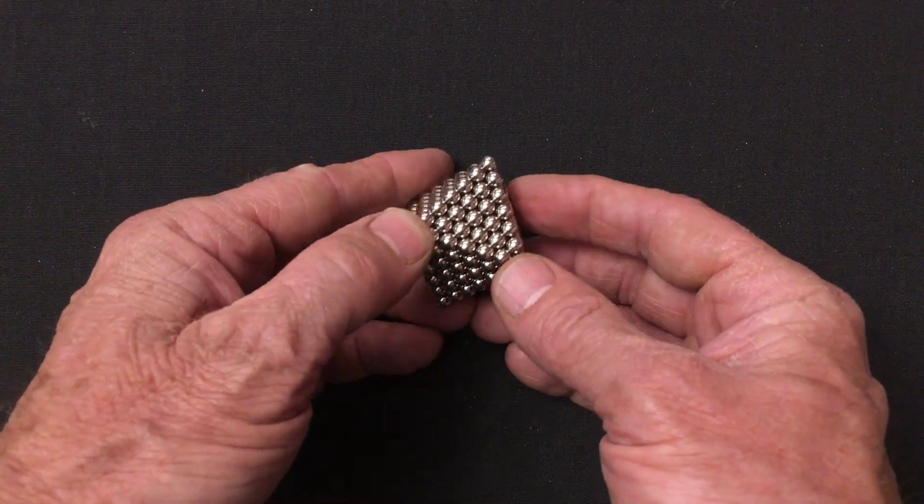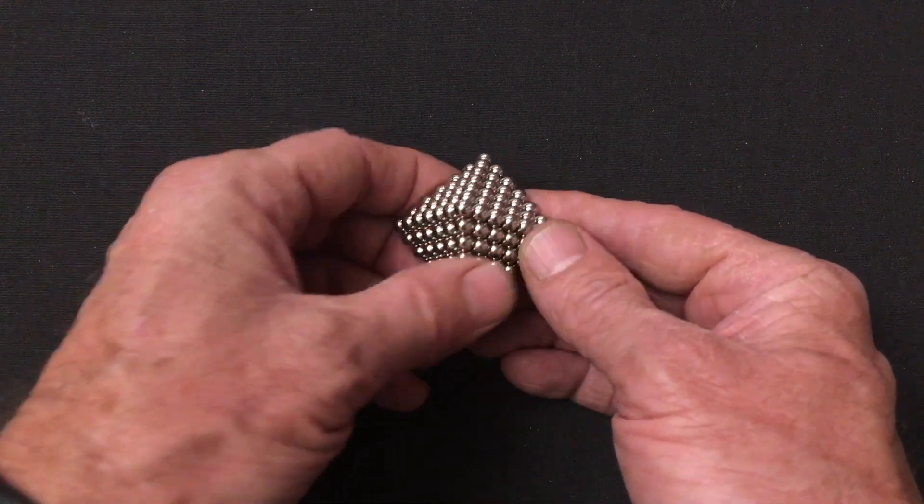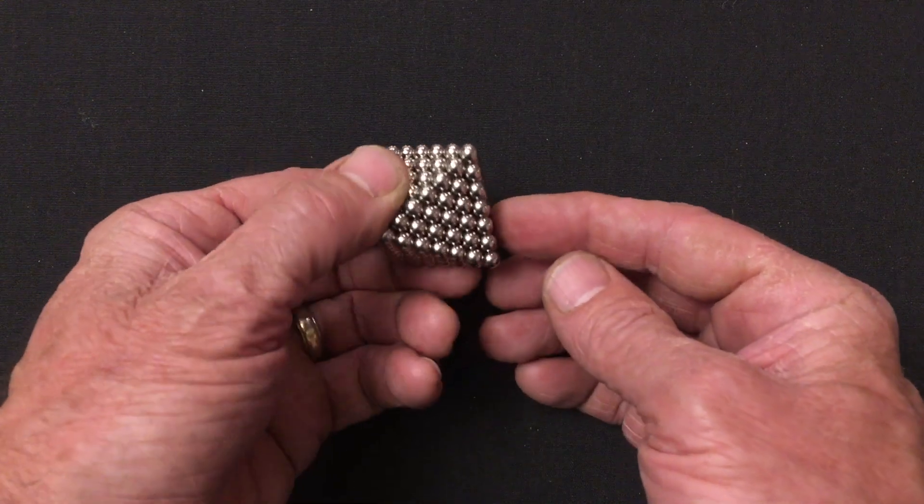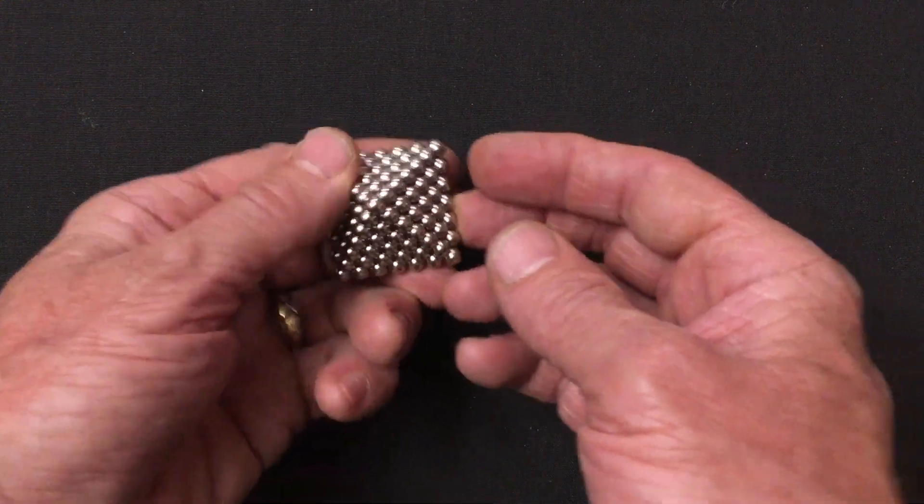The octahedron has eight triangular faces, four on this side and four on that side.